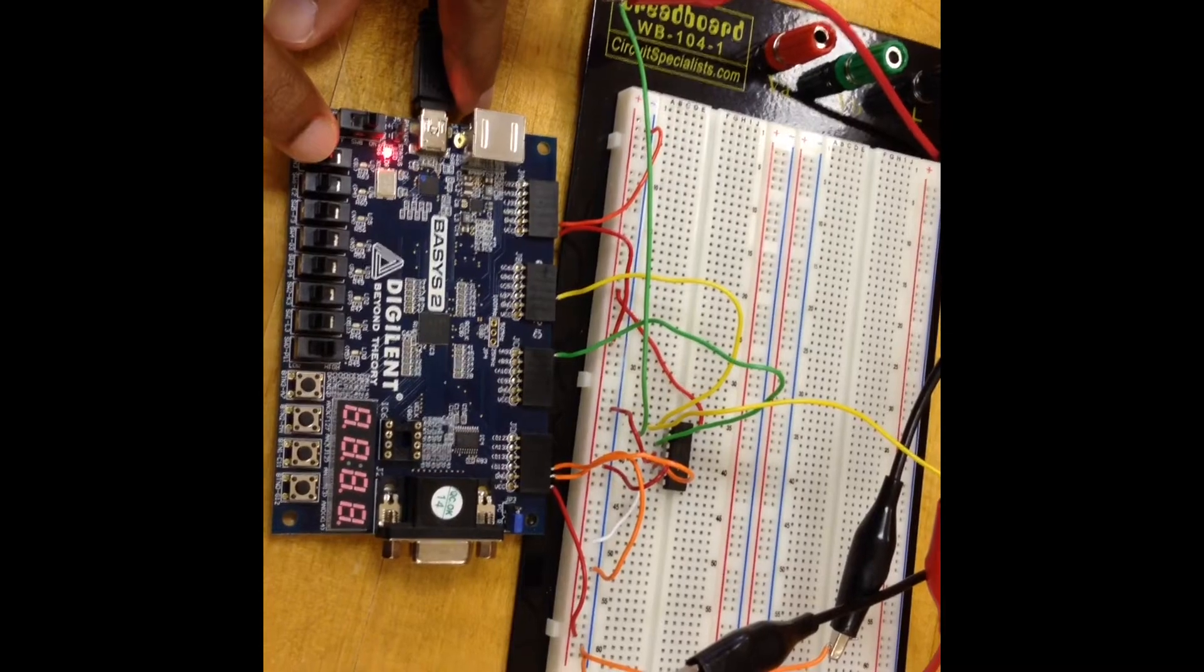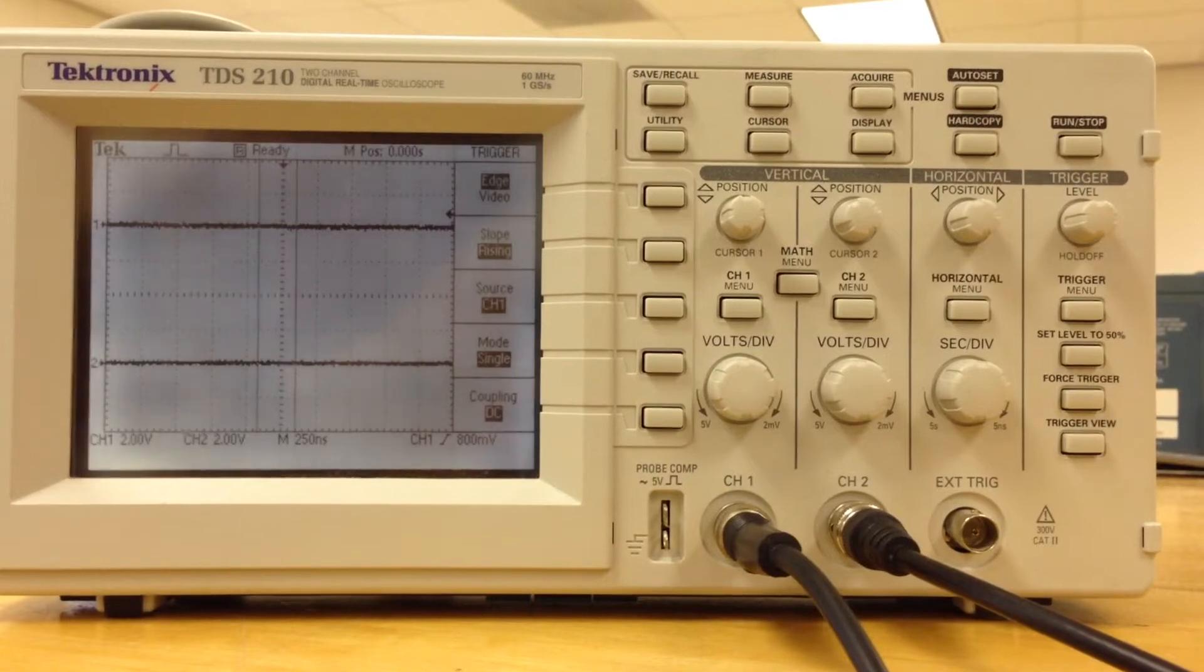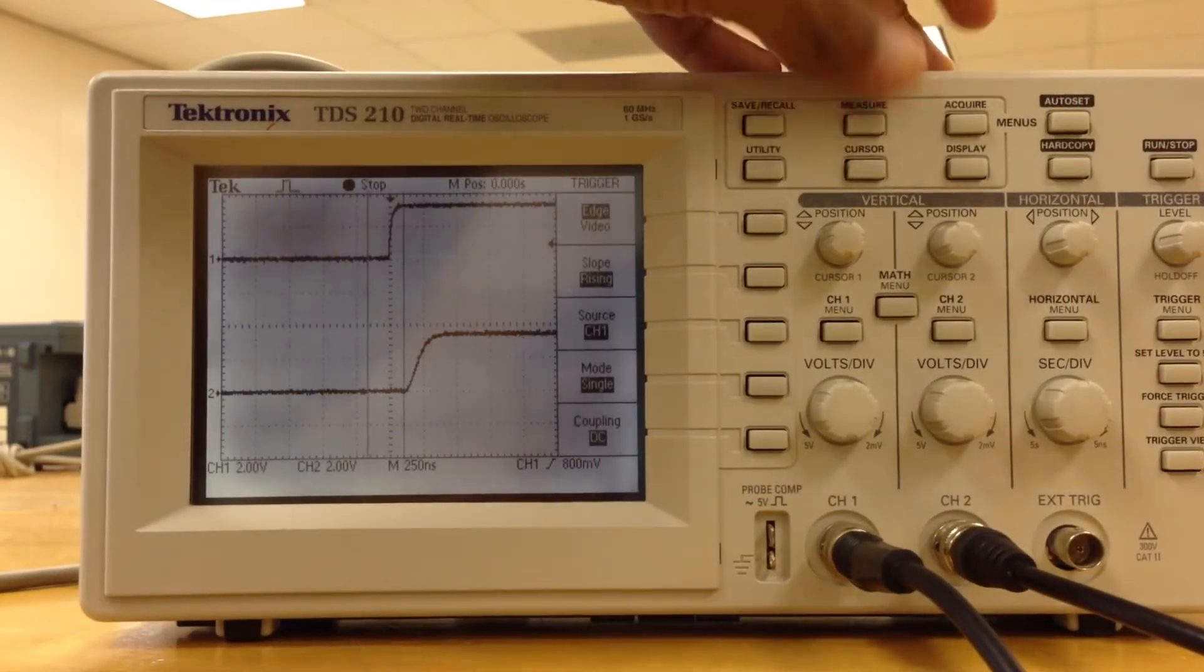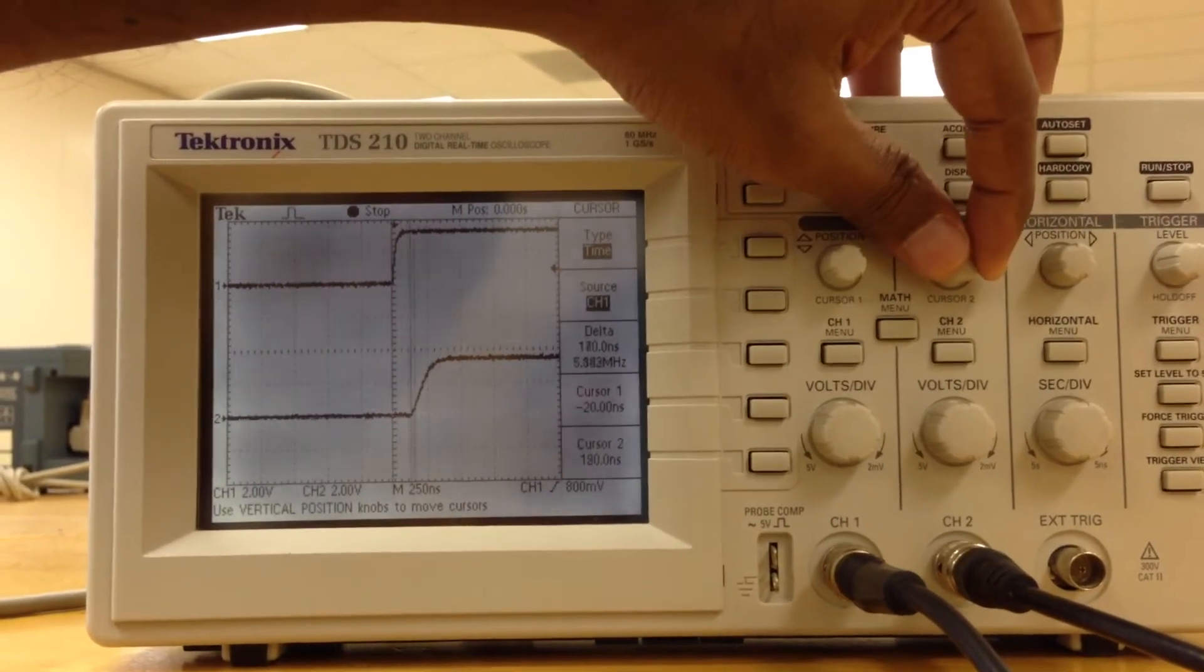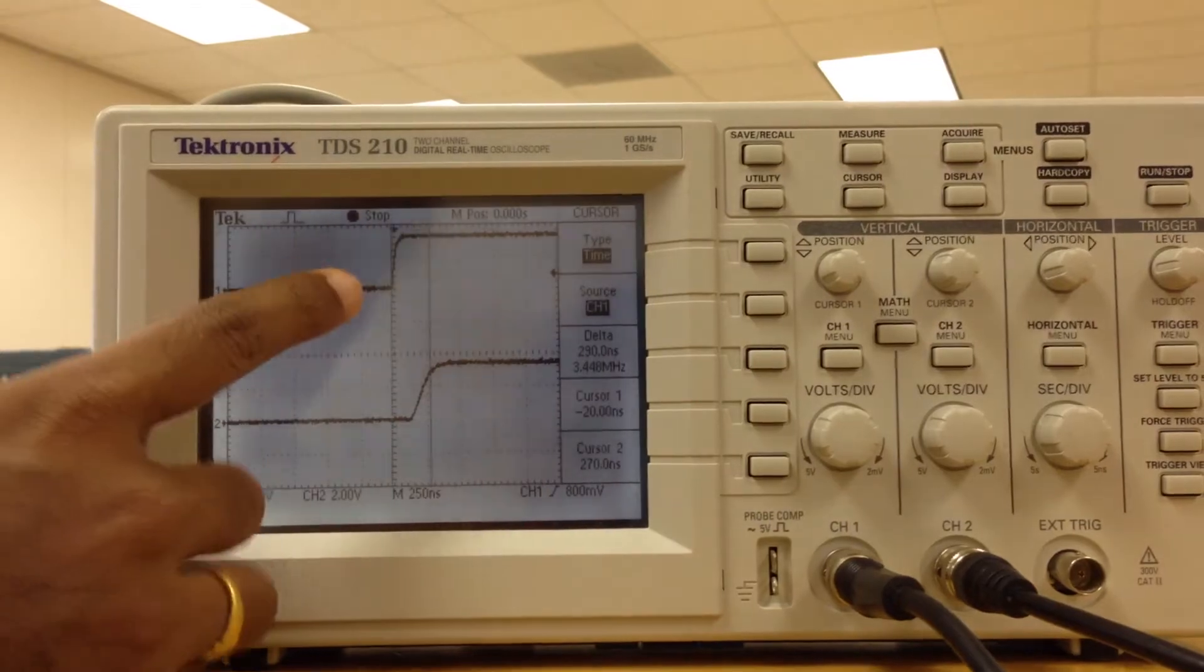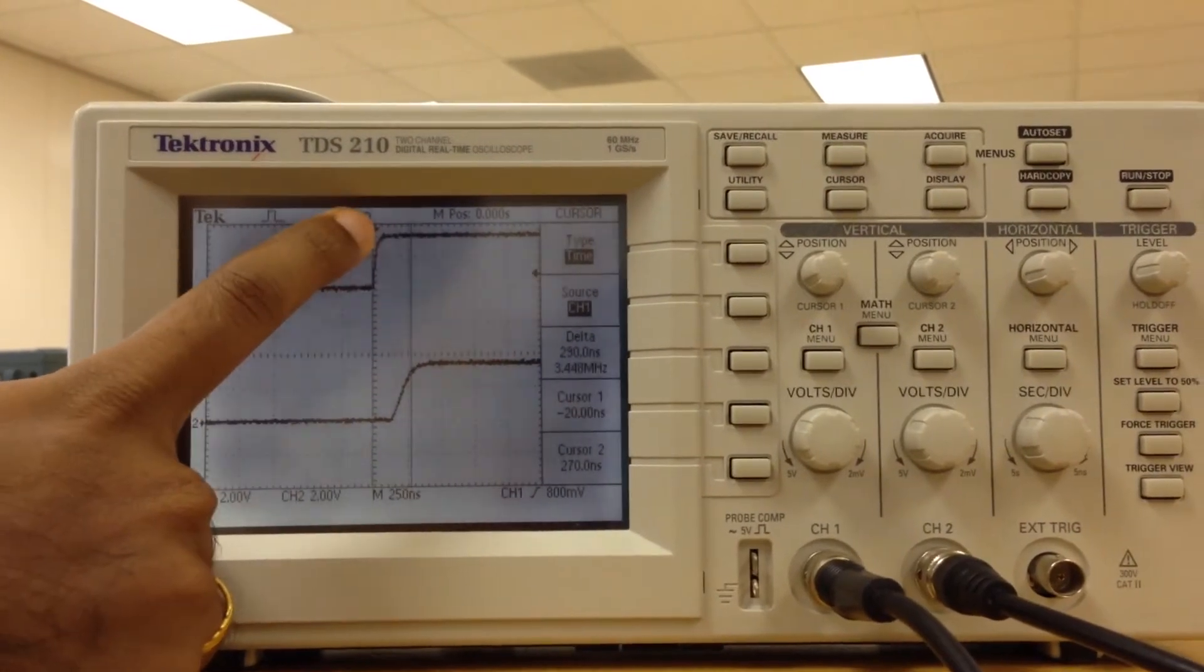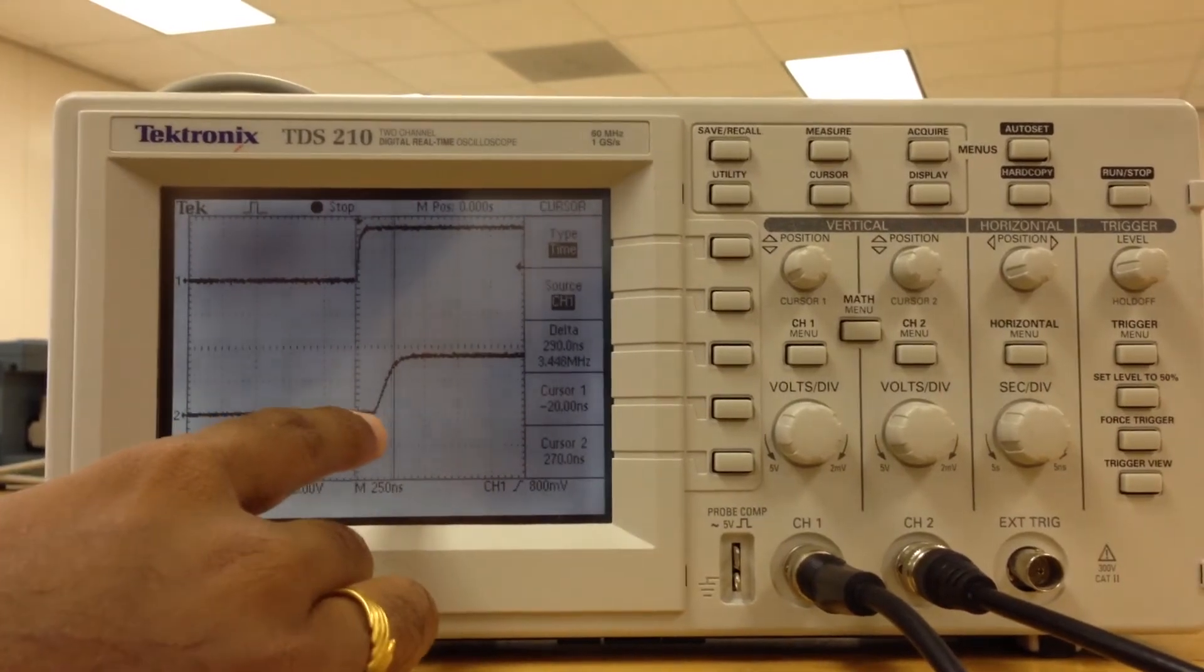As I rise from low to high, you can see this. Now we can use the cursor. Press the cursor. We can use the cursor to move between these two. This is clock. As you can notice, after clock has gone from 0 to 1, there is a small delay for the output Q to go from 0 to 1. This is the delay which we wanted to measure.